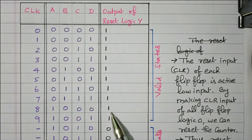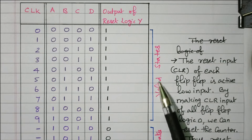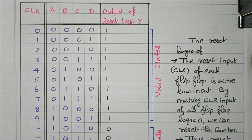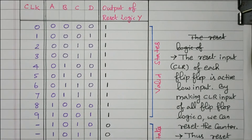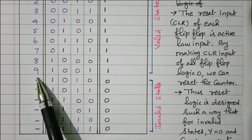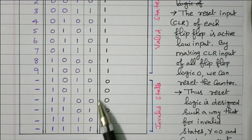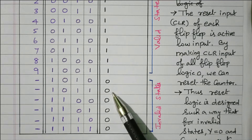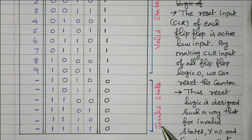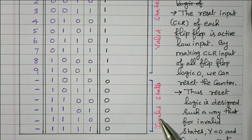States 0 to 9 are called valid states — 10 combinations are valid. States 10 to 15 — the remaining 6 outputs — are not needed; we are giving only 10 clock pulses, so combinations 10, 11, 12, 13, 14, 15 we don't want. These come under invalid states. So 0 to 9 are valid states and 10 to 15 are invalid states.